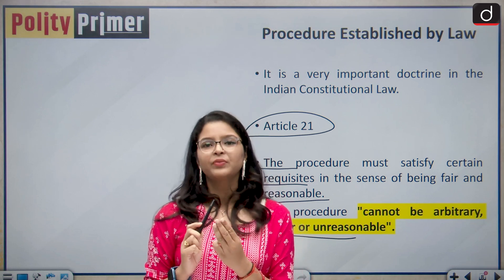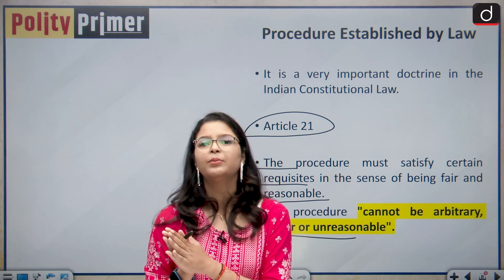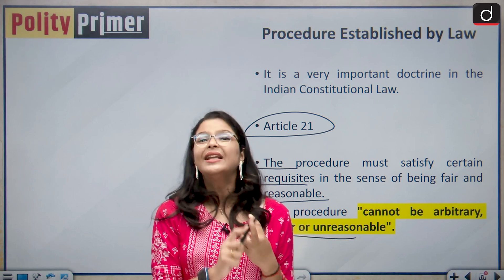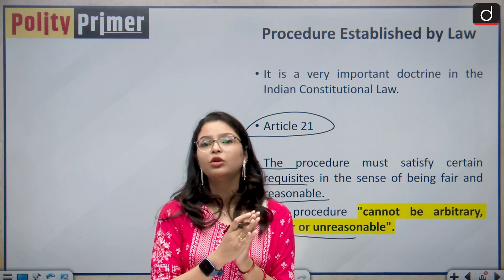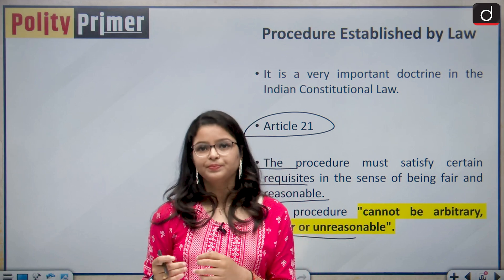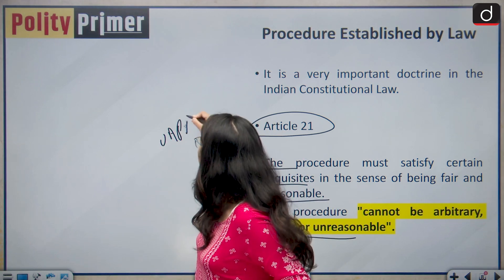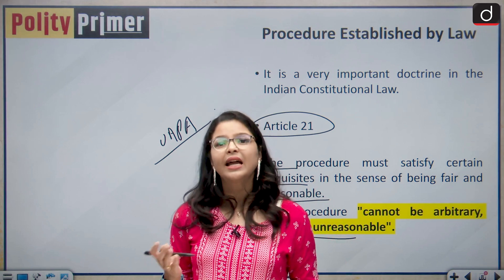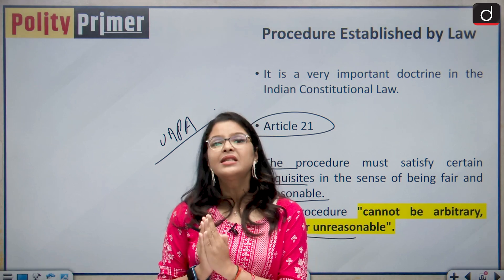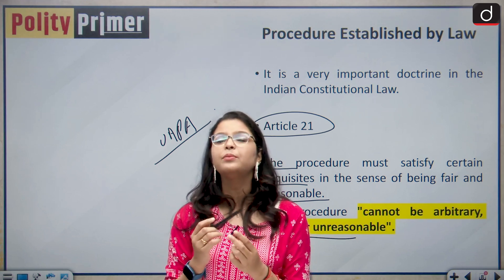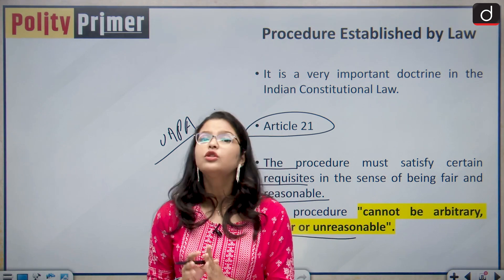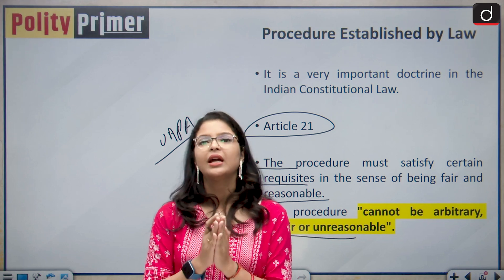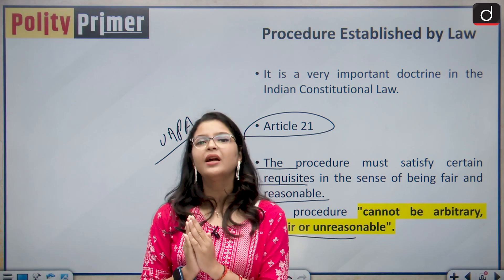The court follows three tests to establish whether personal liberty or right to life has been deprived by just, fair, and reasonable means. First, the court examines whether there is a law. Second, the court examines whether it is a valid law. For example, under the UAPA (Unlawful Activities Prevention Act), if a person's life and personal liberty has been deprived, the court will first analyze whether this law is a valid law. Third, the court sees whether the procedure used is just, fair, or reasonable, and whether it is strictly followed.